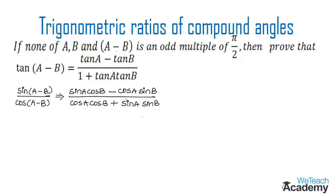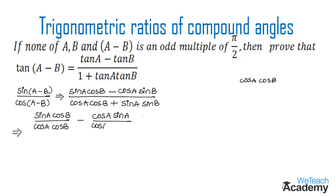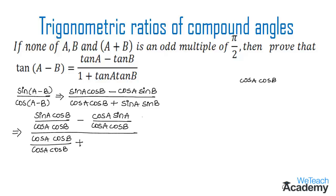Now divide the numerator and the denominator by cos A cos B. By dividing we get: sin A cos B divided by cos A cos B, minus cos A sin B divided by cos A cos B, whole divided by cos A cos B divided by cos A cos B, plus sin A sin B divided by cos A cos B.